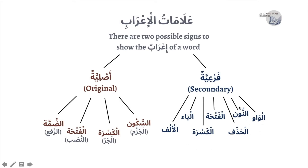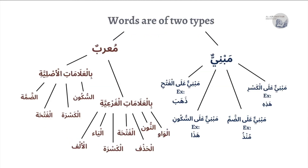To recap: words are of two types — either Mu'rab or Mabni. Mabni is stuck and never changes; it can be stuck on a Fathah, Sukun, Dhammah, or Kasra. Mu'rab means its ending can change and it can accept I'rab — like 'Muhammadun', 'Muhammadan', 'Muhammadin'. When Mu'rab, a word can take the original signs (Dhammah, Fathah, Kasra, Sukun) or the secondary signs, or a combination of both.